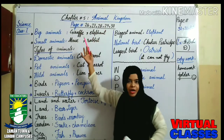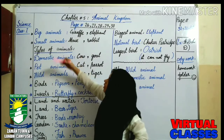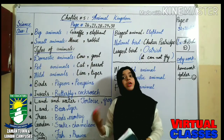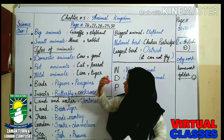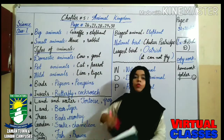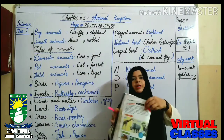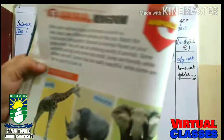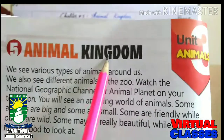This is chapter number 5. In this chapter we will learn about different types of animals — big animals, small animals, types of animals, where they live and what they do. We will read and learn all of these types. First take out your science book and open page number 26. Chapter number 5: Animal Kingdom.